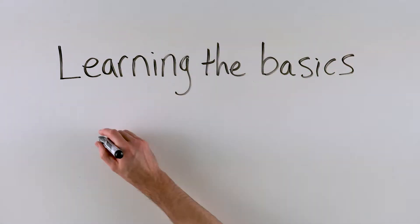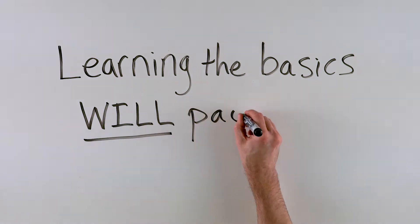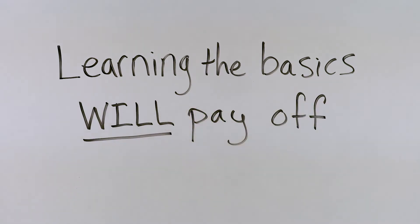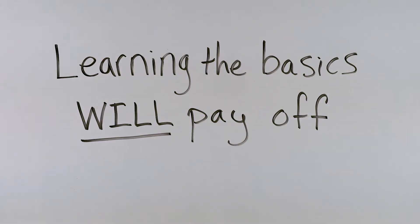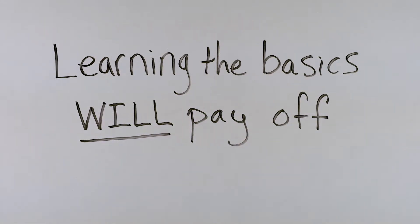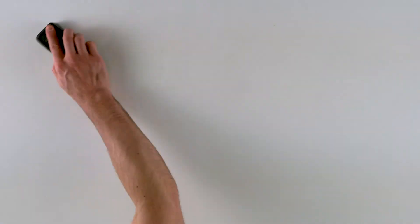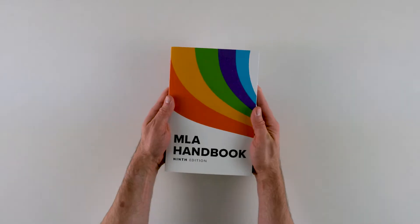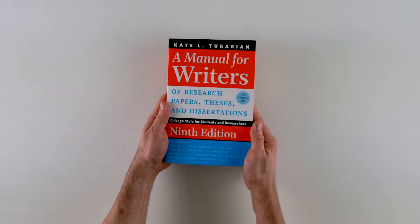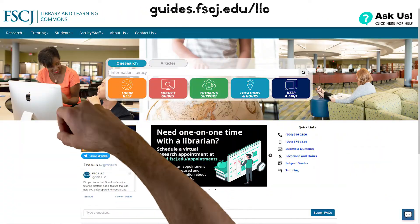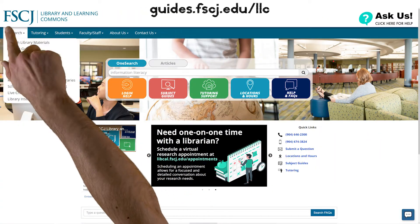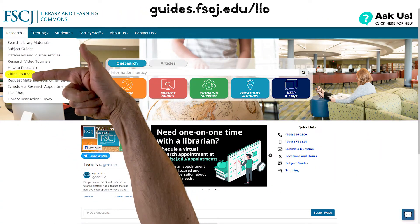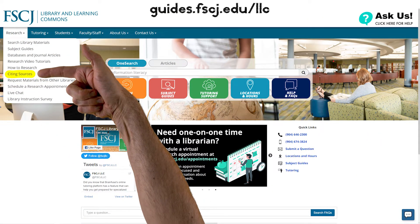A basic knowledge of your citation style can help you catch and correct errors. Memorizing citation styles isn't exciting, but you don't need to know every bit by heart — you just need to be familiar enough with it so you can recognize when things don't look quite right. You can learn more about APA, MLA, and other citation styles using our LibGuides, which are in the Research drop-down menu under Citing Sources.